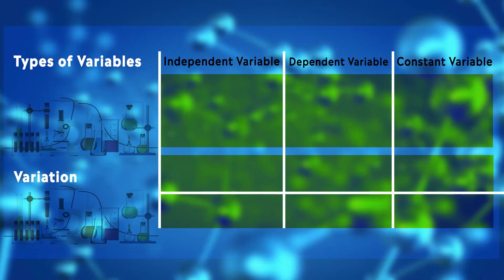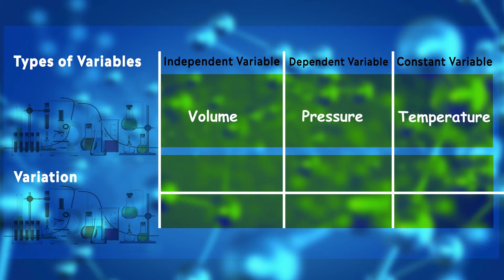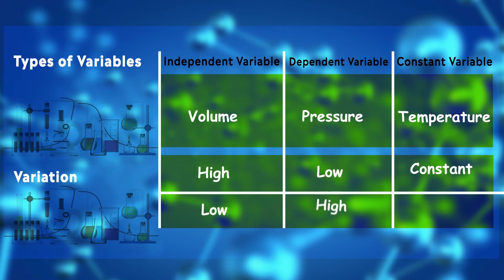Let's fill this table together. The independent variable here is volume. As we started decreasing the volume, the pressure inside increased. The constant variable is temperature — we didn't change any temperature. Higher the volume, lower the pressure; and lower the volume, higher becomes its pressure at constant temperature.